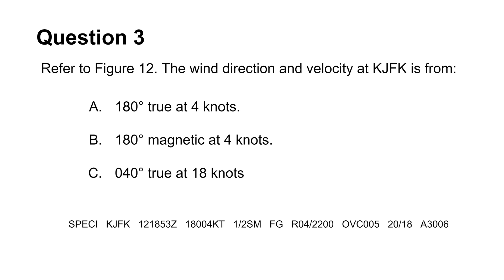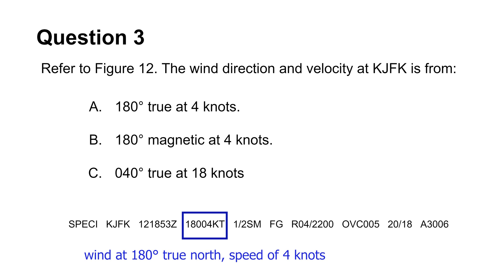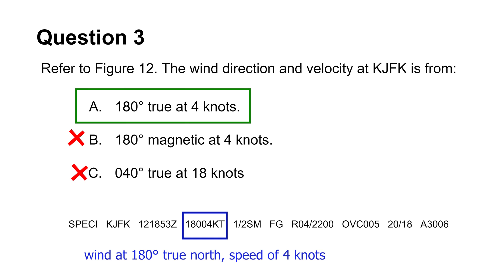The third question asks you to identify wind direction and velocity at KGFK station. We can tell that choice B is wrong since wind direction is given in relation to true north. Choice C is incorrect because it tries to confuse you into believing that the velocity number precedes the direction number in the report. This makes choice A the answer, since wind direction always comes first — 180 degrees to true north — and then velocity at 4 knots.